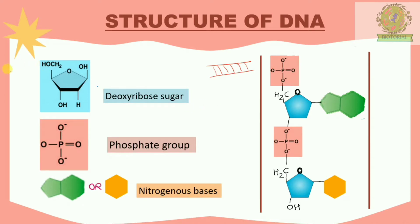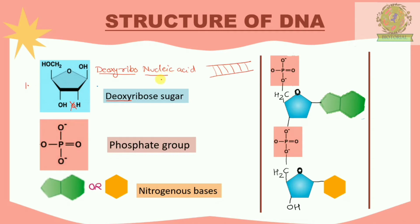DNA is made up of three major components. The first component is deoxyribose sugar. Why deoxyribose sugar? Because normally in ribose sugar we have an -OH group present, but since in DNA this oxygen is removed, we call it deoxyribose sugar. That is why the full form of DNA becomes deoxyribonucleic acid — nucleic acid because DNA is always present in the nucleus of the cell.